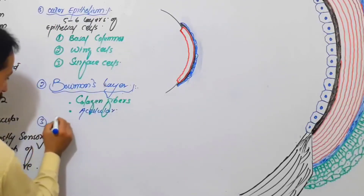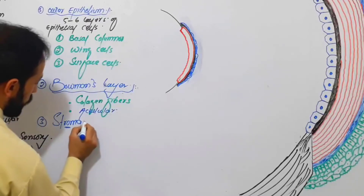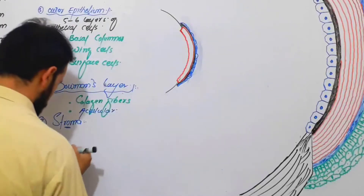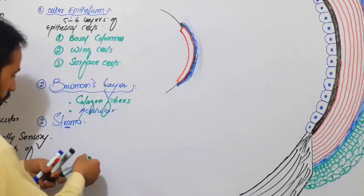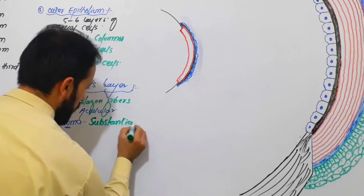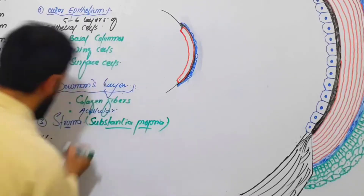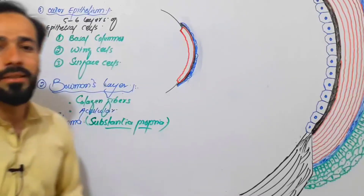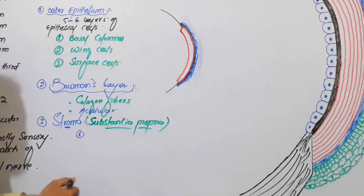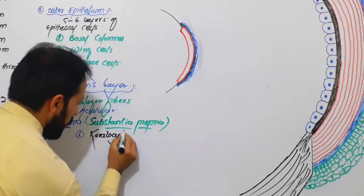The third layer is called the stroma and this stroma layer is also known as the substantia propria. This layer contains lots of cells, and those cells are called the keratocytes.